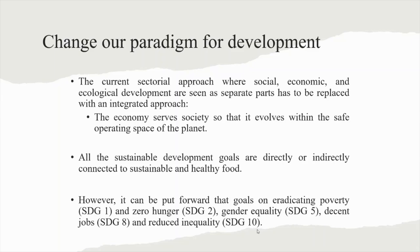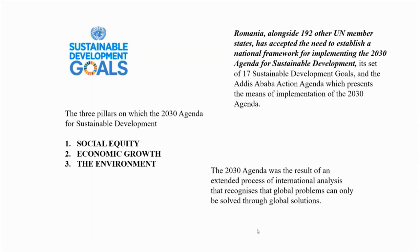Romania, alongside 192 other UN member states, has accepted the need to establish a national framework for implementing the 2030 Agenda for Sustainable Development, its set of Sustainable Development Goals and the Addis Ababa Action Agenda. The 2030 Agenda was the result of an extended process of international analysis that recognizes that global problems can only be solved through social solutions. The three pillars on which the 2030 Agenda is based are social equity, economic growth, and the environment.